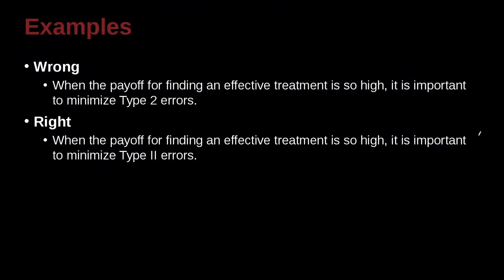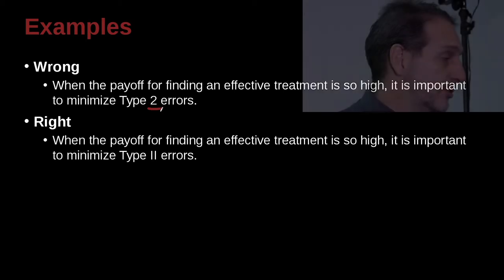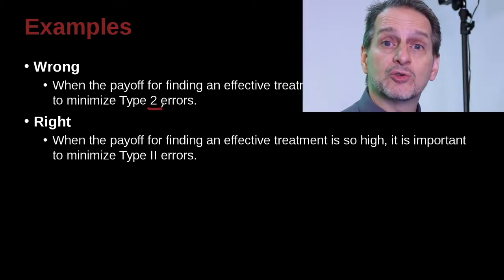When the payoff for finding effective treatment is so high, it is important to minimize type 2 errors. Now here the number is 2, so this seems okay. 2 is less than 10, and it's not a series of numbers here. So why would we not just go ahead and use the number 2?